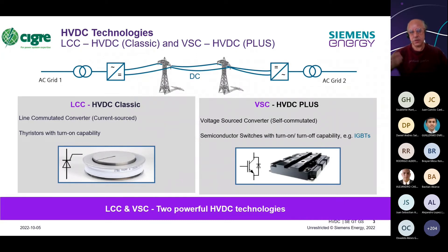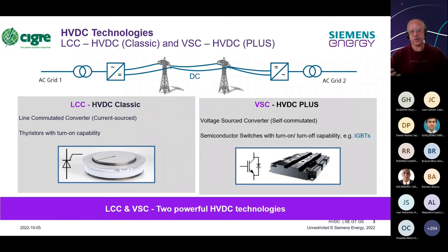HVDC is generally applied for bulk power transmission over long distances, where it provides cost advantages compared to AC transmission. It also reduces the right-of-way requirement, meaning the line corridor is much smaller for a given amount of power. This results in both capital expenditure savings and operational expenditure savings due to lower losses.